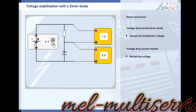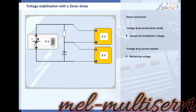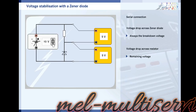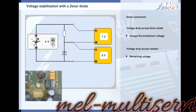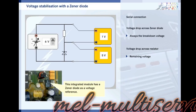A constant voltage is always available at the voltage divider. This does not change even if the input voltage fluctuates, as long as it exceeds the breakdown voltage. Zener diodes are often used in electronic components which stabilize the 5 volts frequently occurring in control units.